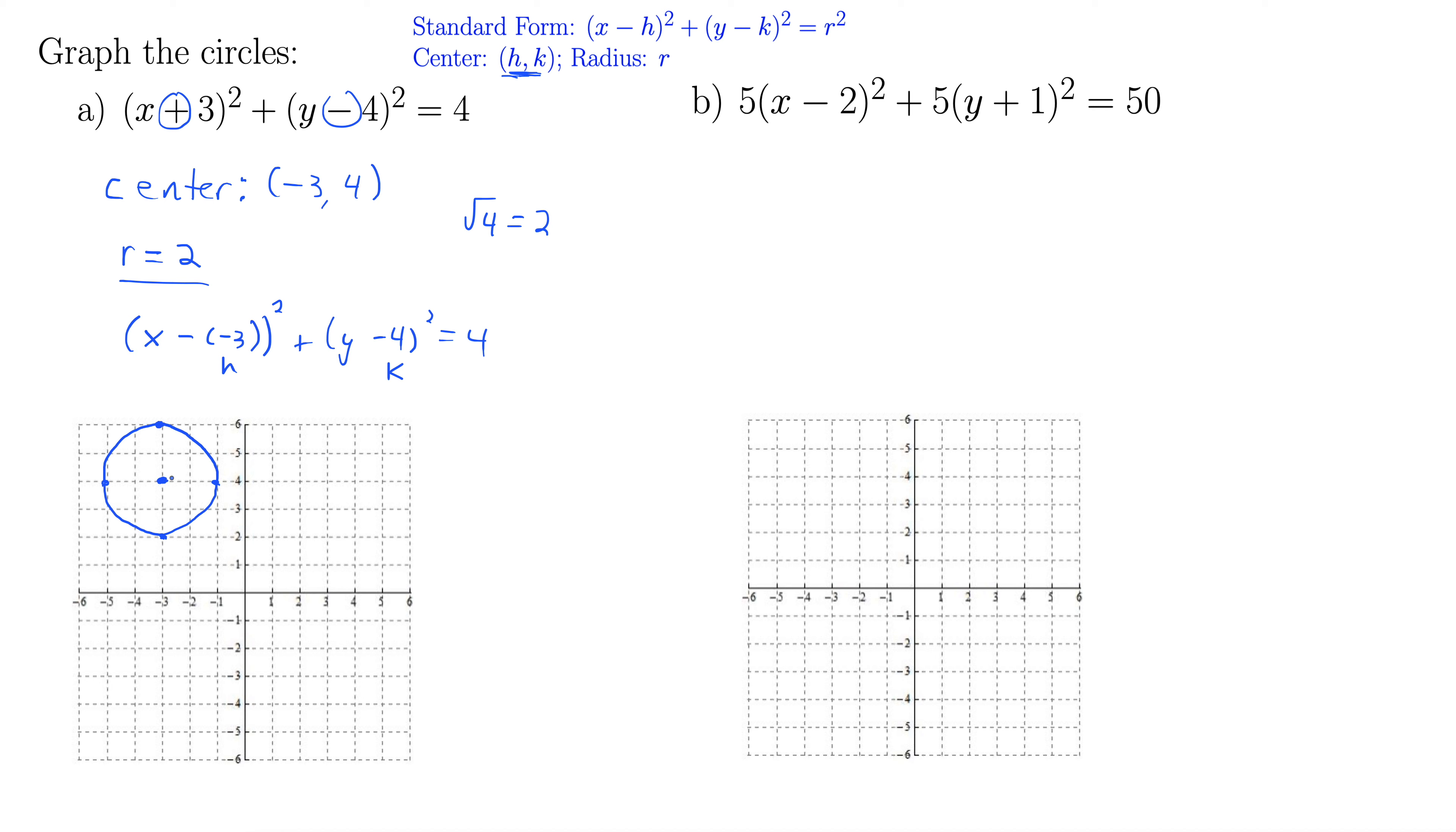There we go. And this radius here is 2. Anywhere you draw the radius, it's going to be 2. Let's just draw a 2, though that's not necessary either. Let's look at b.